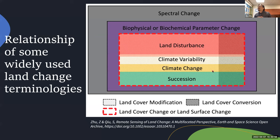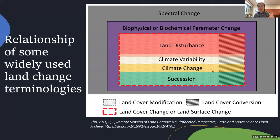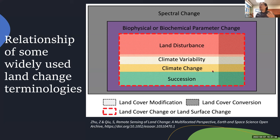Next slide. This figure, for the first time, shows the relationship of all the terms I just mentioned in one figure. Basically, spectral change includes everything — if there's a spectral change, definitely something happened there. However, if there is spectral change, it does not necessarily mean there is a real change. For example, the sensor can have a malfunction, there can be atmospheric influences, there can be clouds — all those kinds of things can show up as spectral change without having any land surface change occurring.